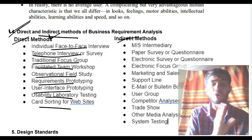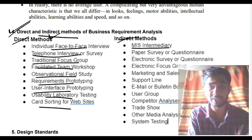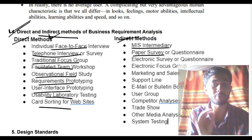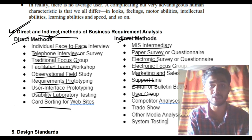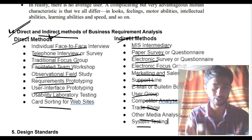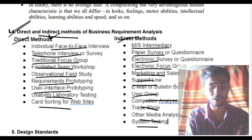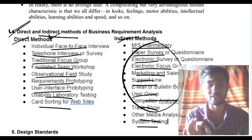Next we have indirect methods — these are all online. Online methods include: MIS intermediary, paper survey or questionnaire, feedback survey, electronic survey, electronic focus group, email, support line, marketing and sales user groups, comparator analysis, trade show, other media analysis, and system testing. All of these can be done online and they all fall under the indirect methods of business analysis.